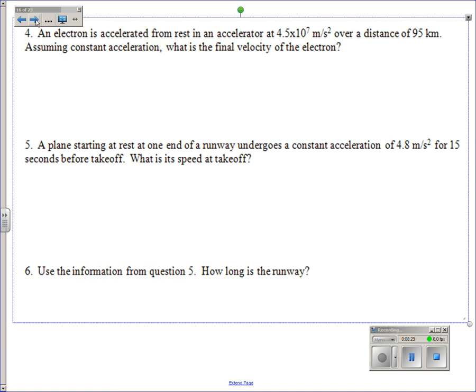An electron is accelerated from rest in an accelerator of 4.5 times 10 to the 7 meters per second squared over a distance of 95 kilometers. Assuming constant acceleration, what is the final velocity of the electron? Okay, so we have the acceleration, we have the distance, and I want to change that number to meters right away. It's accelerated from rest, which means the initial velocity is zero, and I'd like to know the final velocity.